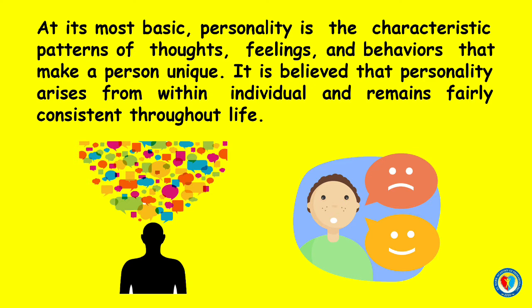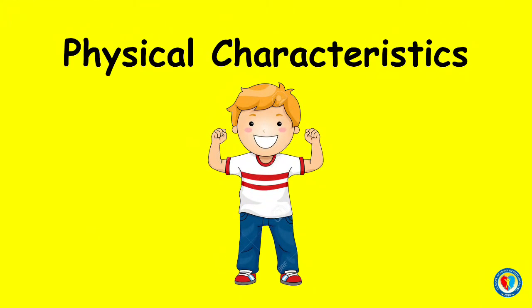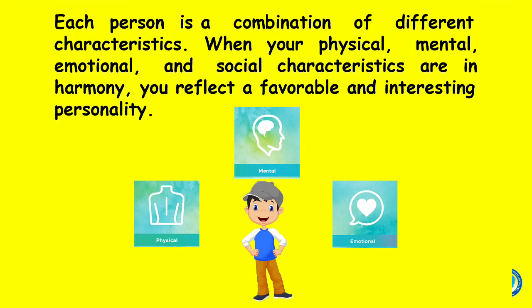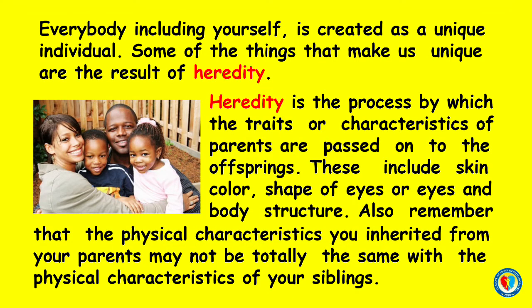It is believed that personality arises from within the individual and remains fairly consistent throughout life. Let's talk about physical characteristics. Physical characteristics are defining traits or features about your body — these are the aspects that are visually apparent. The first thing you see when you look at someone could be their hair, clothes, nose, or figure. Everybody is created as a unique individual, and some of the things that make us unique are the results of heredity — the process by which traits of parents are passed on to their offspring.